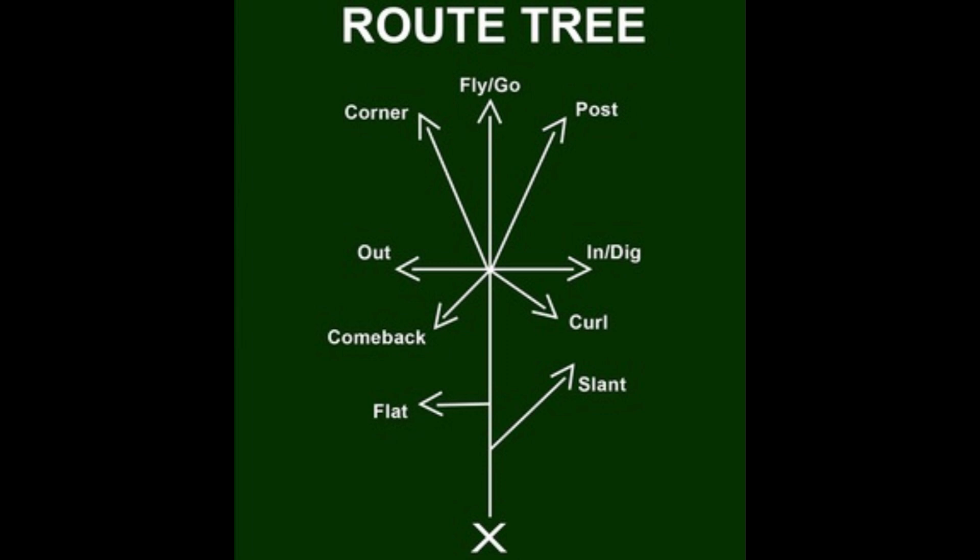The slant is a quicker throw, something that happens very quickly. The player goes up the field, that's the stem of the route, and then makes a quick cut and slants up. That's a quick throw and a quick read for the quarterback, and many teams use it that way.